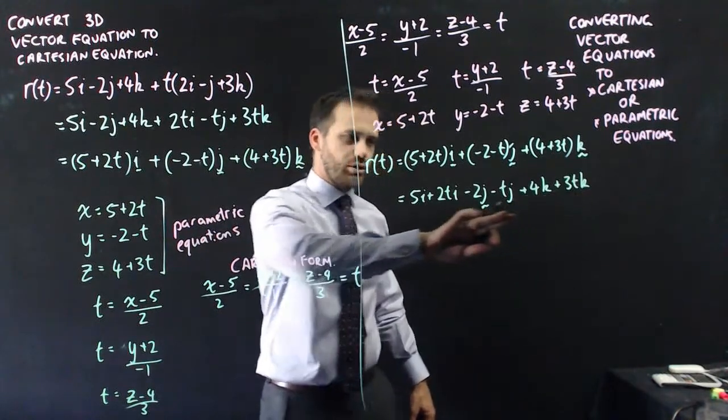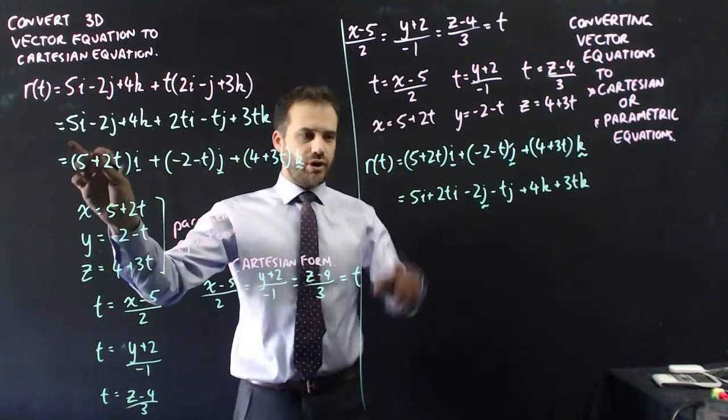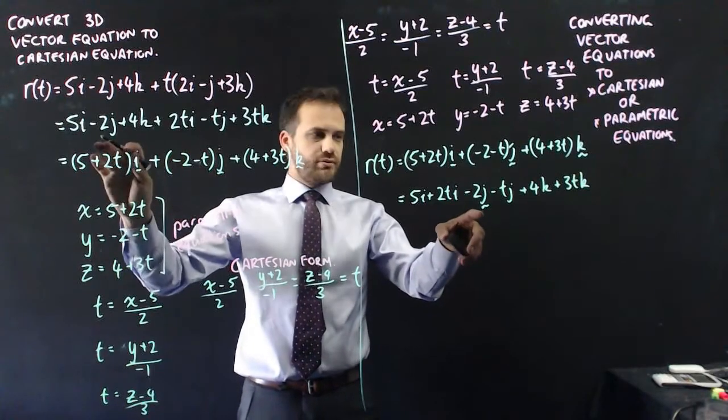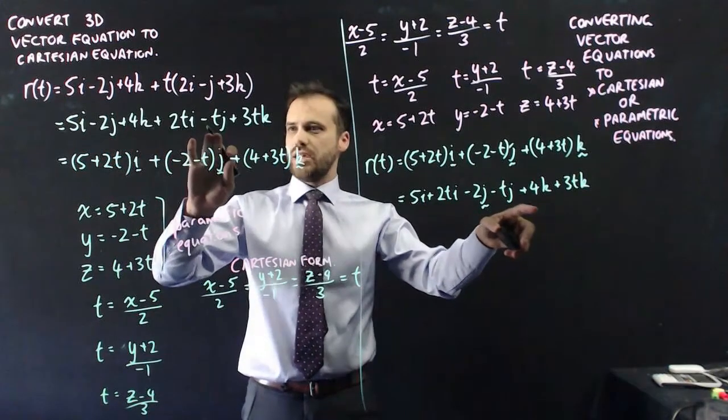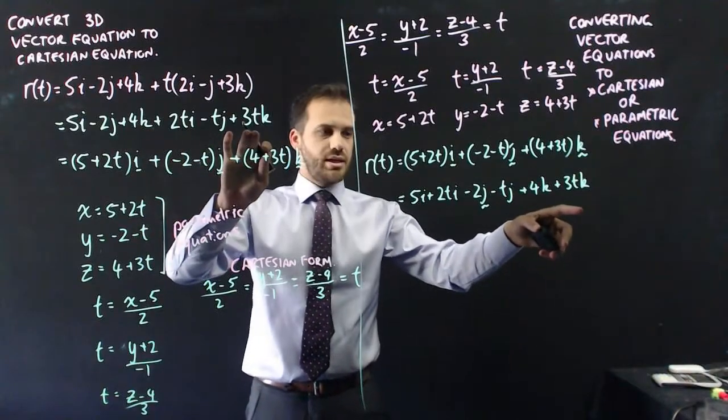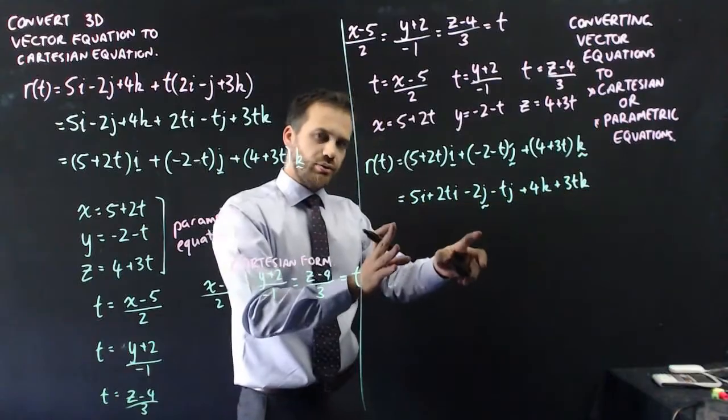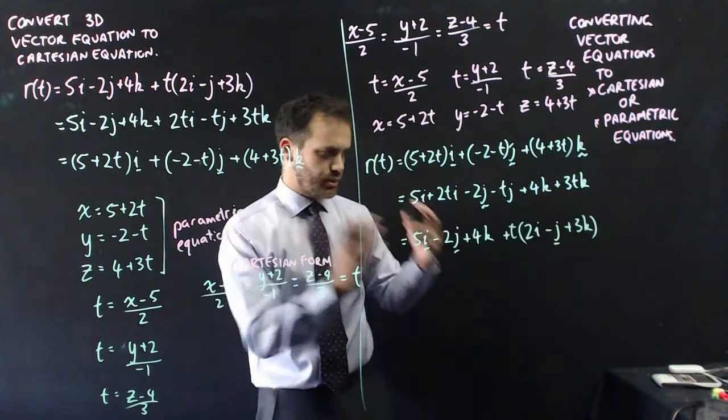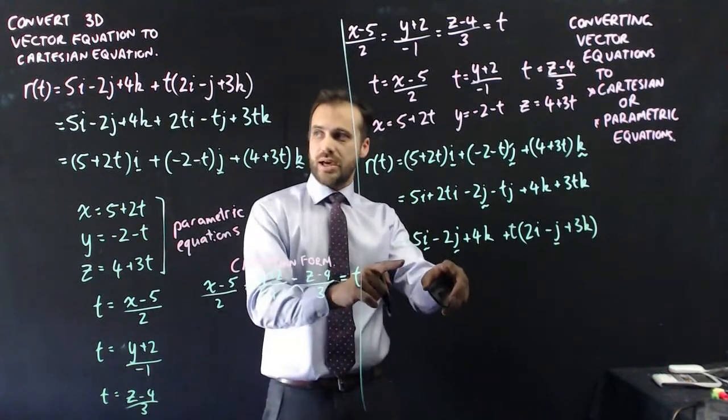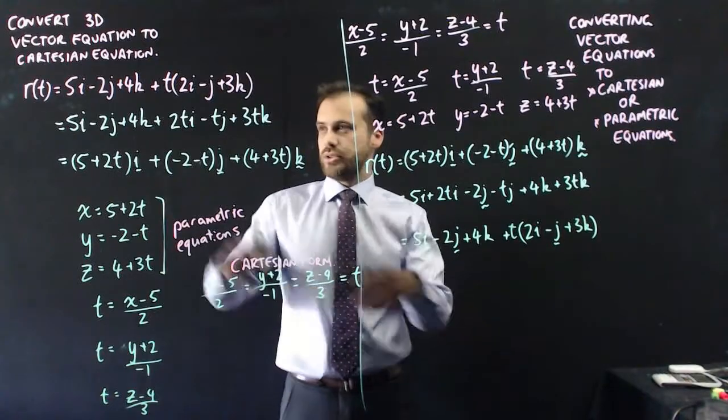So when I expand that, all of those terms should look very familiar. Here, 5i, 5i, 2ti, 2ti, negative 2j, negative 2tj, 4k, 3tk, and now I can move all of the t ones over here and all of the non-t ones here. Done. And you can see that is identical to that.